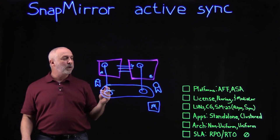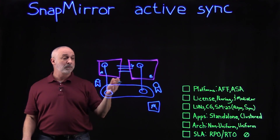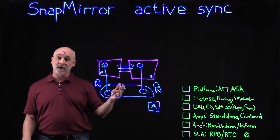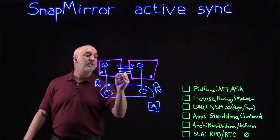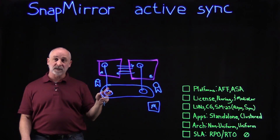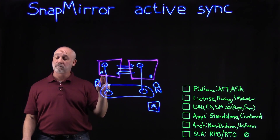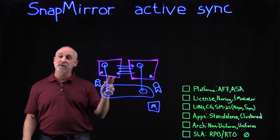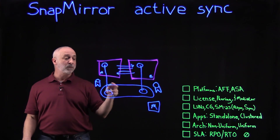With our new feature, we're able to do symmetric, active-active, bi-directional replication. That allows reading and writing to occur on both sides of the cluster. When writes occur on either site A or site B, we are guaranteed that replication occurs synchronously in real time.